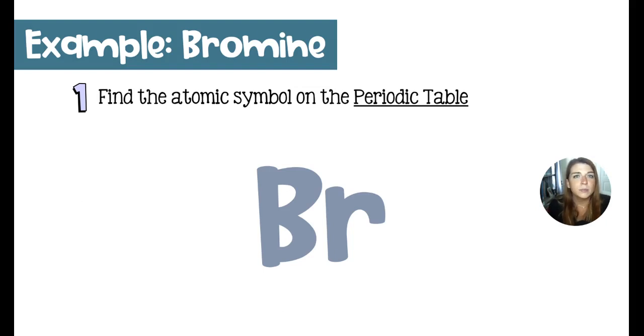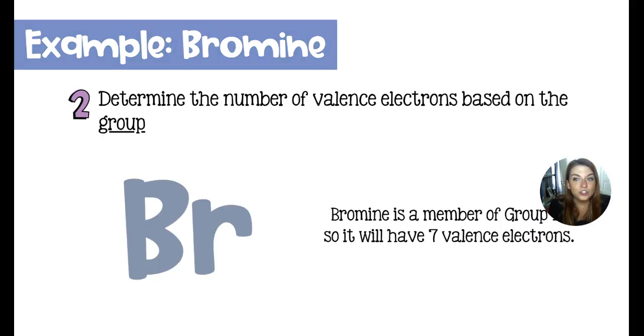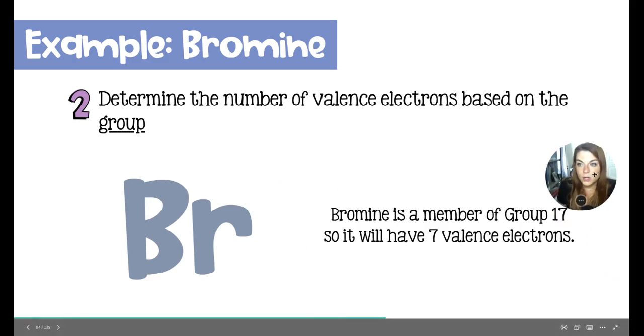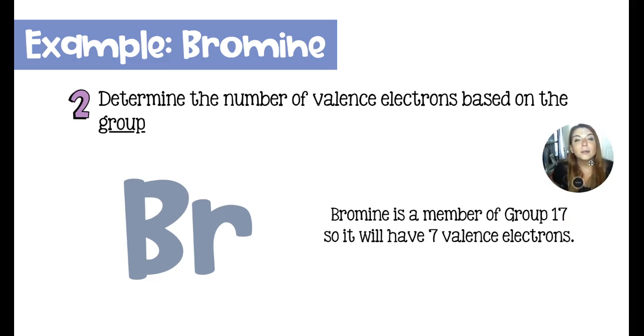So I'm going to walk you through an example of how to draw bromine. Bromine has the symbol Br, which I have obtained from the periodic table. If I was doing a very ugly Bohr model, this would have 35 electrons, and that's a lot. But I can just check out its group number on the periodic table to find the number of valence electrons and draw the Lewis structure instead. So because bromine, Br, is a member of group 17, it will have seven valence electrons, just those on the outside.